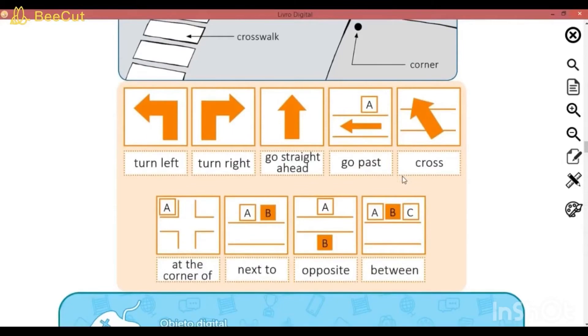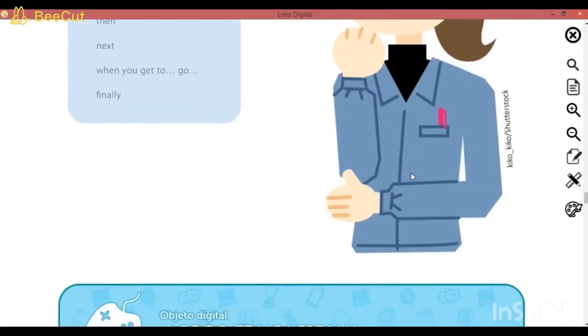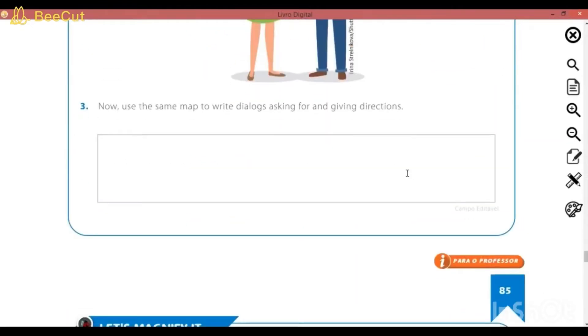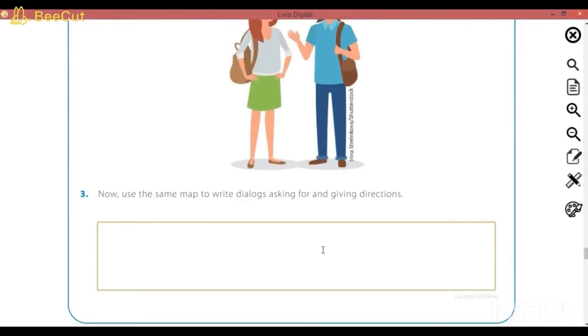Então, vocês vão praticar oralmente. E em seguida, vocês vão escrever. Podem utilizar o Google Tradutor. Não tem nenhum problema. Vários diálogos com as direções. Como é que você faz para chegar no banco, na padaria, na bakery, no bank. Então, vocês vão criar.